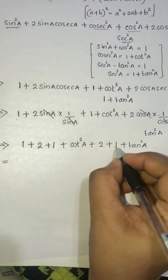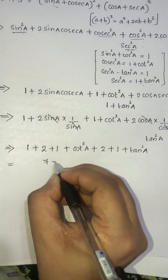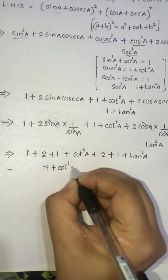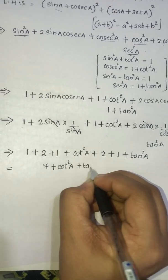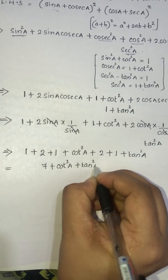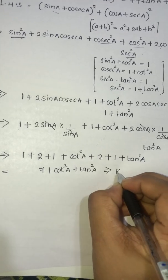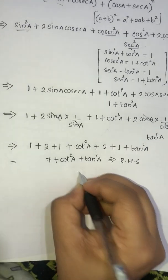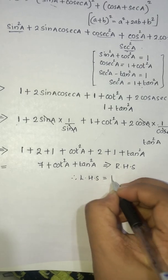Continuing: 4, 5, 6, 7 — so we get 7 + cot²A + tan²A, which is equal to RHS. Hence LHS is equal to RHS.